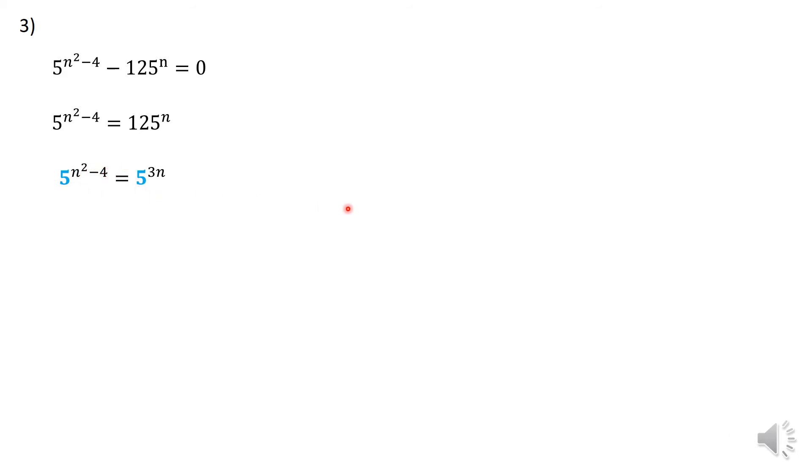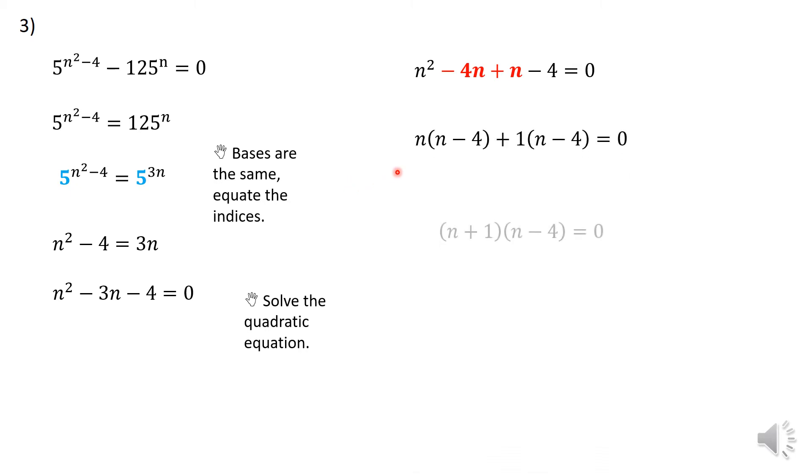Again, you see, I indicated by making the bases using the same color, because I can drop them and only equate the indices. So n²-4 = 3n. That becomes a quadratic equation, and it should factorize. I hope you still remember how to solve quadratic equations. There are plenty of videos that you can find on this channel assisting you on how to solve quadratic equations. So the two values for N will be negative 1 and positive 4.